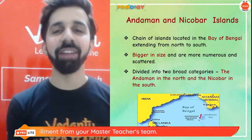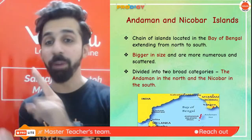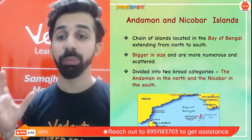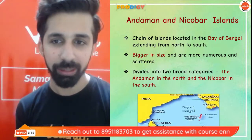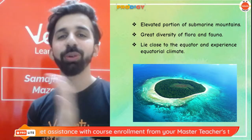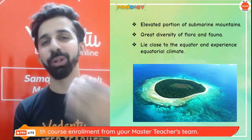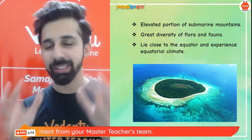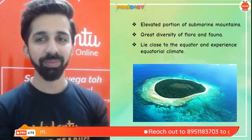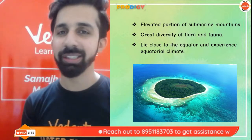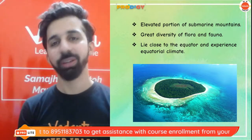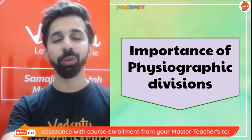Andaman and Nicobar Islands is a chain of islands in the Bay of Bengal, extending from north to south. They are bigger in size and more numerous. The islands are classified into Andaman in the north and Nicobar in the south. These islands are actually the peaks of submerged mountains. Although India doesn't lie in the equatorial zone, Andaman and Nicobar sometimes experience equatorial climate because they are located very close to the equator.